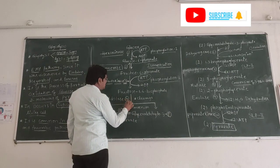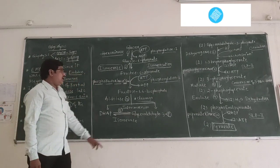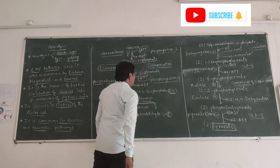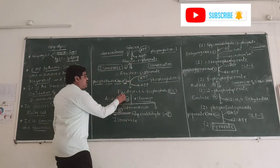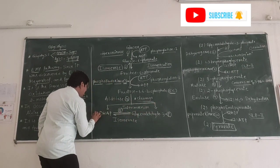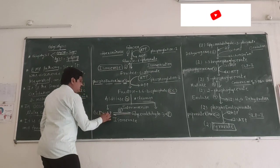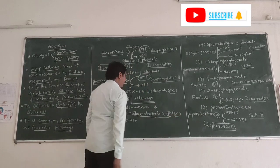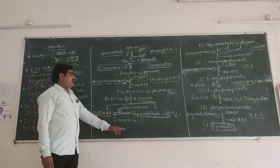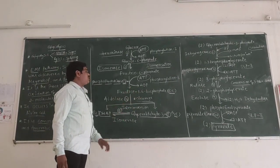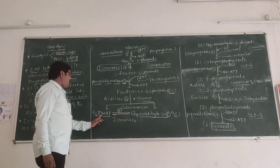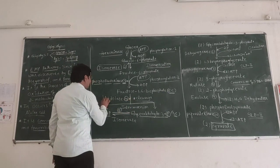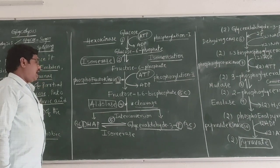The fourth reaction is the cleavage of fructose-1,6-bisphosphate. This 6-carbon compound is split into two 3-carbon compounds: dihydroxyacetone phosphate and glyceraldehyde-3-phosphate. This cleavage reaction is catalyzed by the enzyme aldolase.